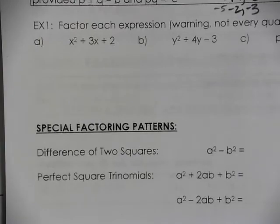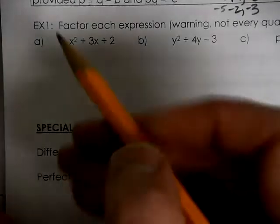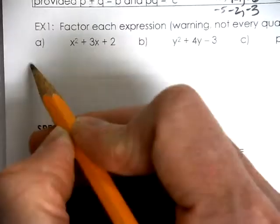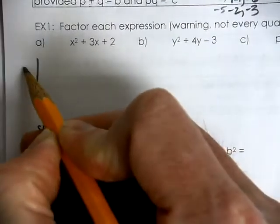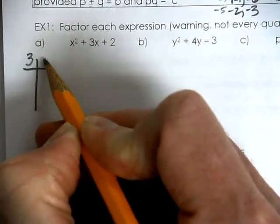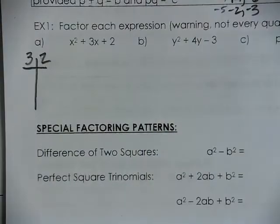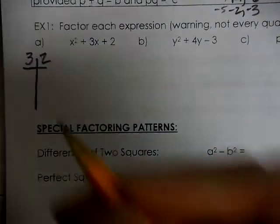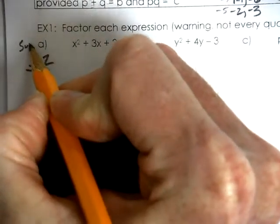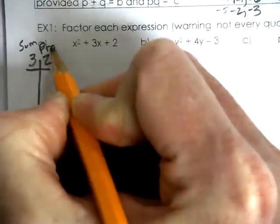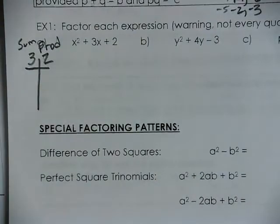So let's give this a try here. We have x squared plus 3x plus 2. You can probably do some of this right in your head, but not everyone can keep that organized. So we have a sum and product.